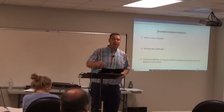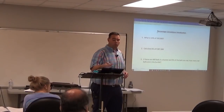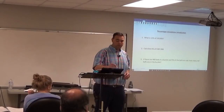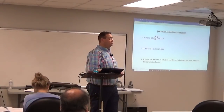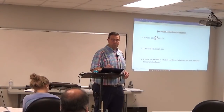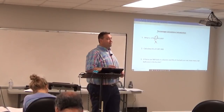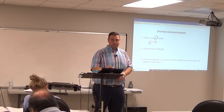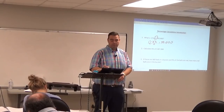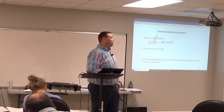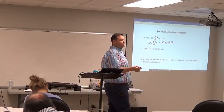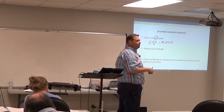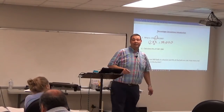When we talk about percentages, the word 'of' means multiply. So when you see 12% of something, that 'of' means multiply — it's really 12% times $150,000. Here's the problem: you can't type it into your calculator that way. You can't type the percentage first; you have to type the real number first.